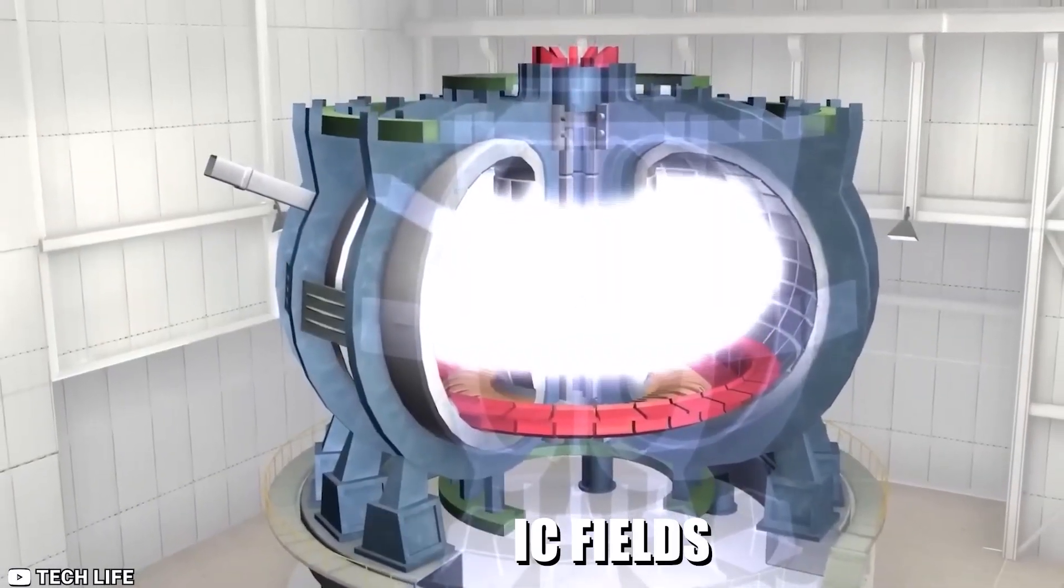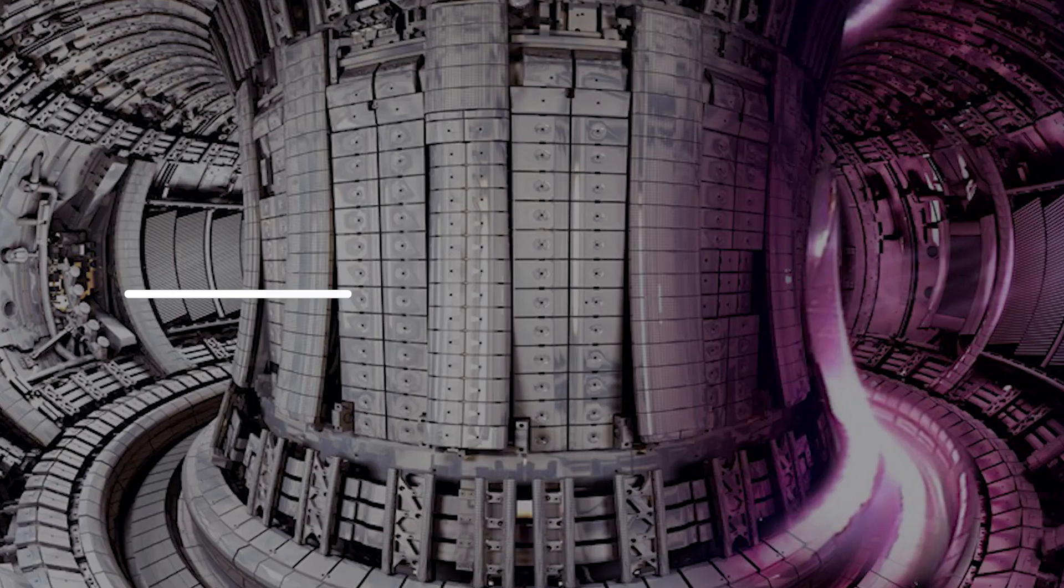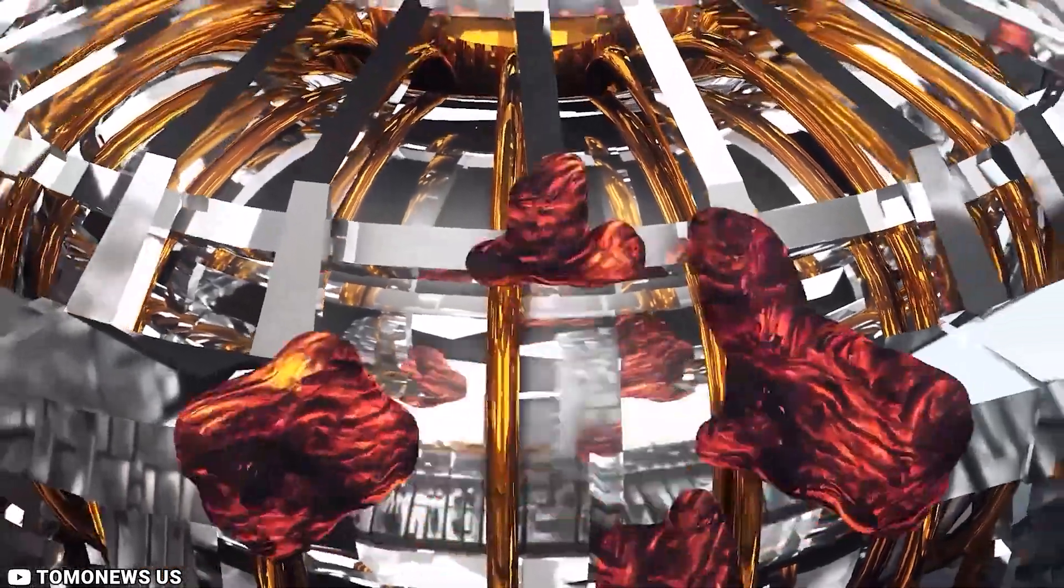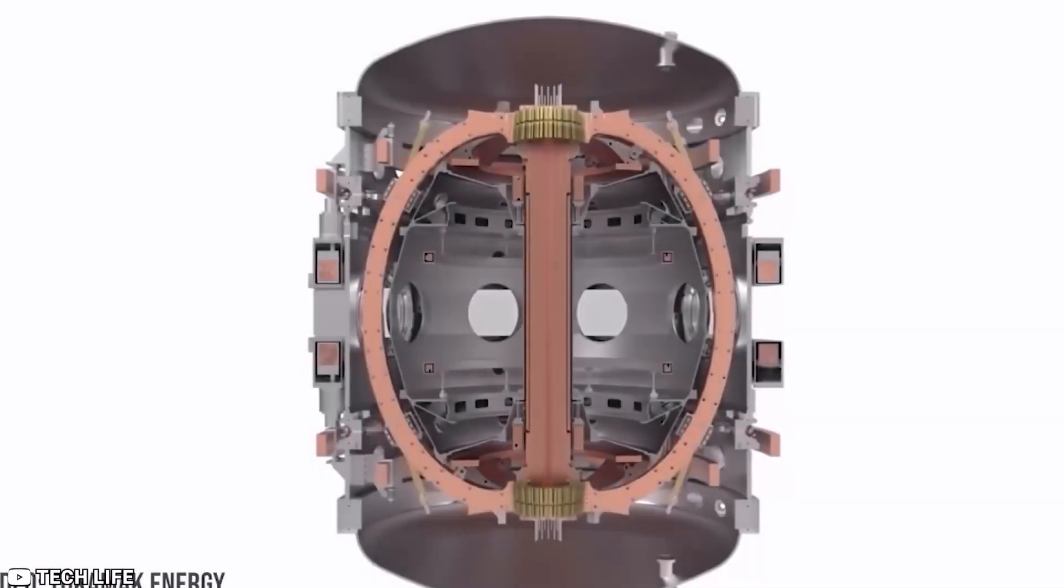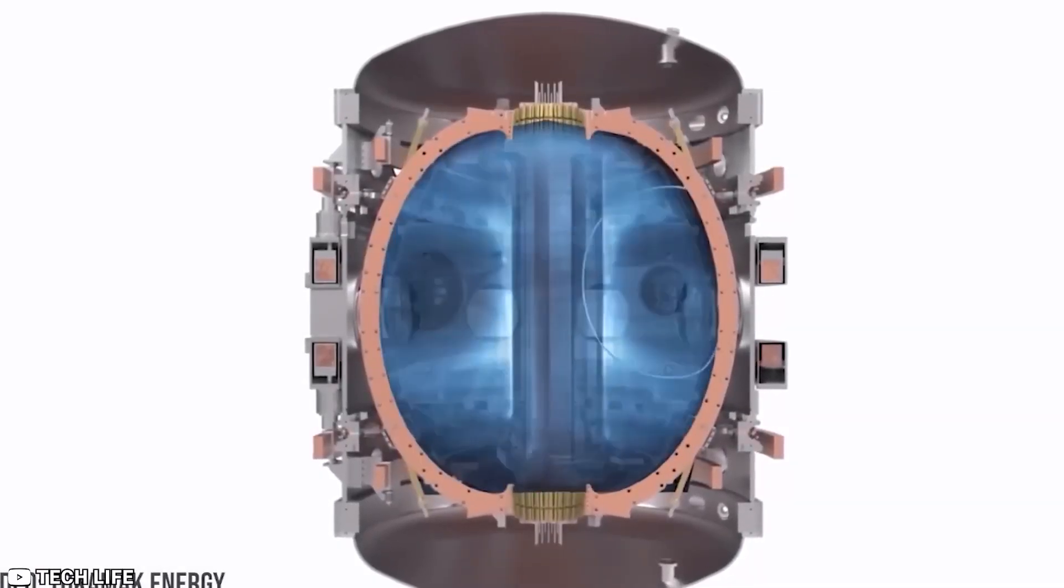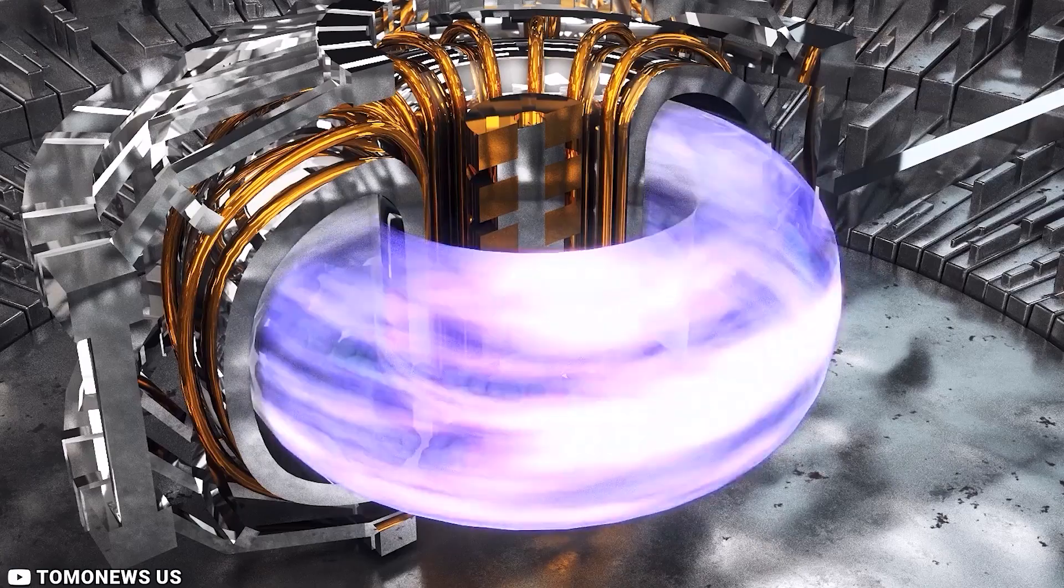Fusion plasmas are the conditions necessary for the fusion of light elements to produce energy. Strong magnetic fields are utilized in a tokamak device to contain and regulate the plasma. The tokamak is an experimental device made to capture fusion energy. The energy generated by the fusion of atoms inside a tokamak enters the vessel's walls as heat.